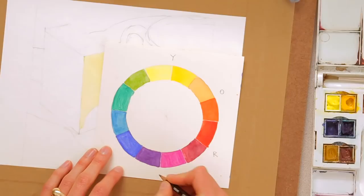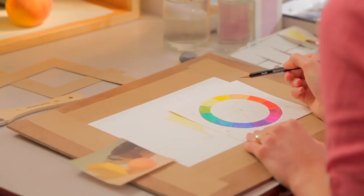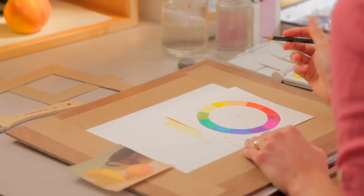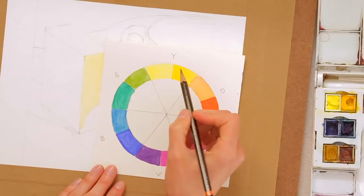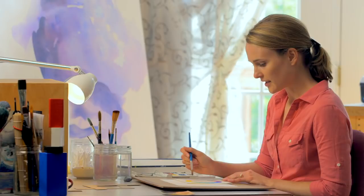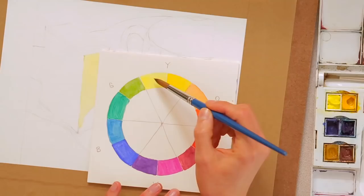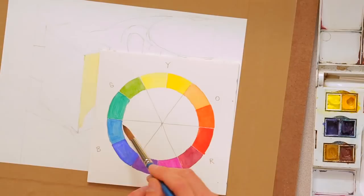Within each color family there is a warm and a cool pigment. Actually, there are many, many different pigments that could fall within this range, but if you have a warm and a cool version of these colors then you can mix many, many things. If you want to mix a very saturated green, then you would choose the yellow that's closest to green on the color wheel, so it would be your lemon yellow, and you would choose the blue that is closest to green on the color wheel, which is your phthalo blue.